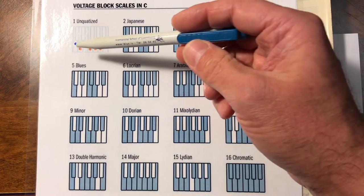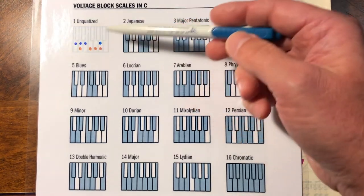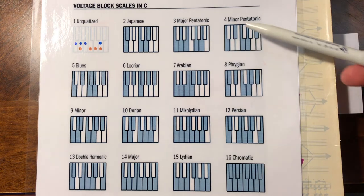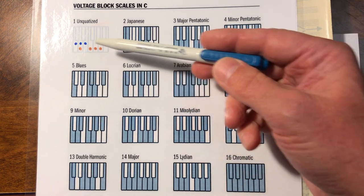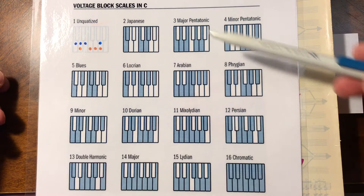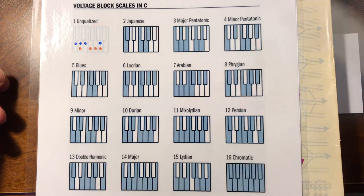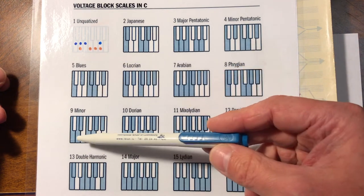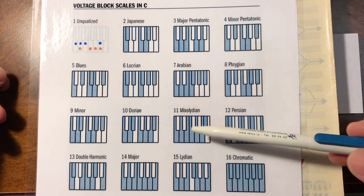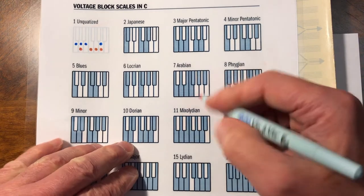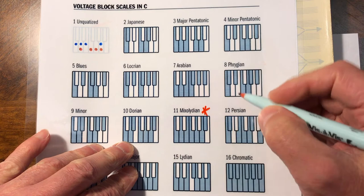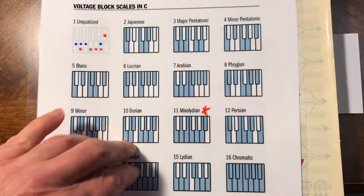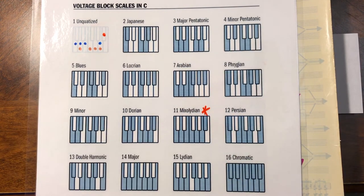We have our red dots and blue dots on the keyboard, and we can look at these voltage blocks in the scale of C and determine where these keys fit in which of these scales — these methods of scaling. It's not pentatonic, not the blues, not Phrygian, not really minor — there it is: it's mixolydian. And look at that, we actually get an extra key we didn't even know was part of it. What does a mixolydian scale sound like?